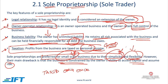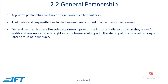The sole proprietorship, general partnership, and limited partnership are all taxed only once, where profits are given to individual owners who pay personal income tax. The corporation, however, is taxed twice — first at the corporate level, then again personally. Let's move on to the general partnership.